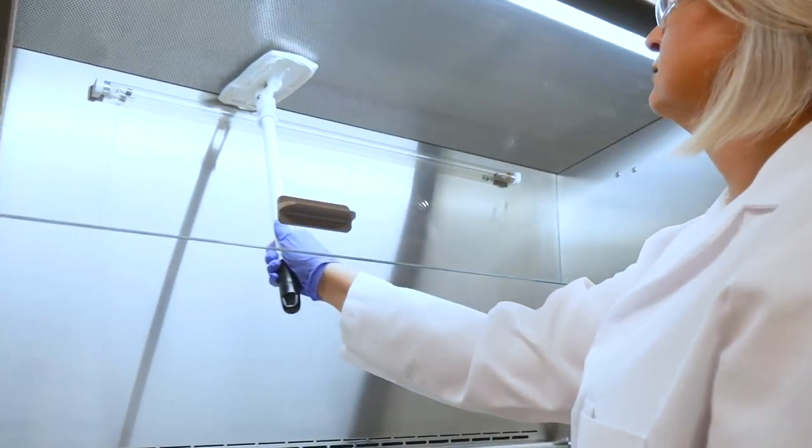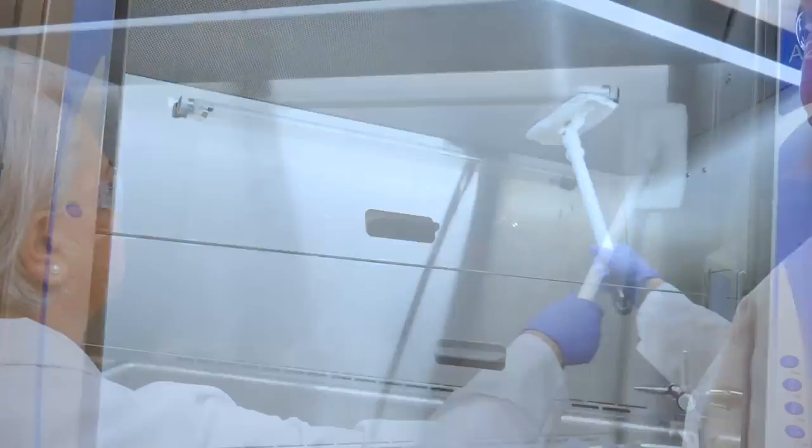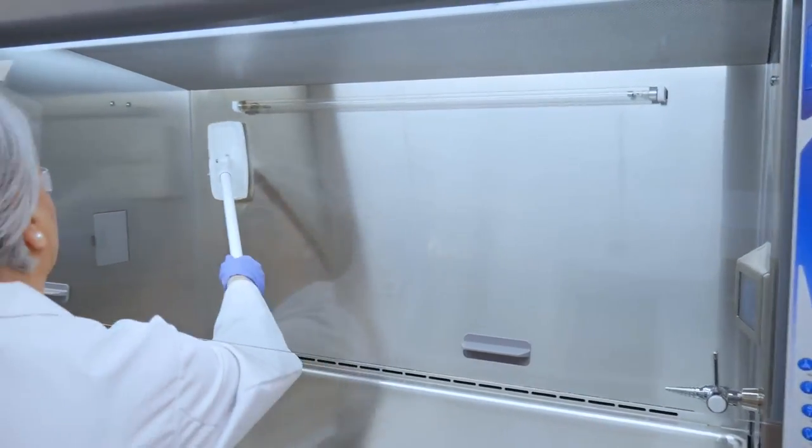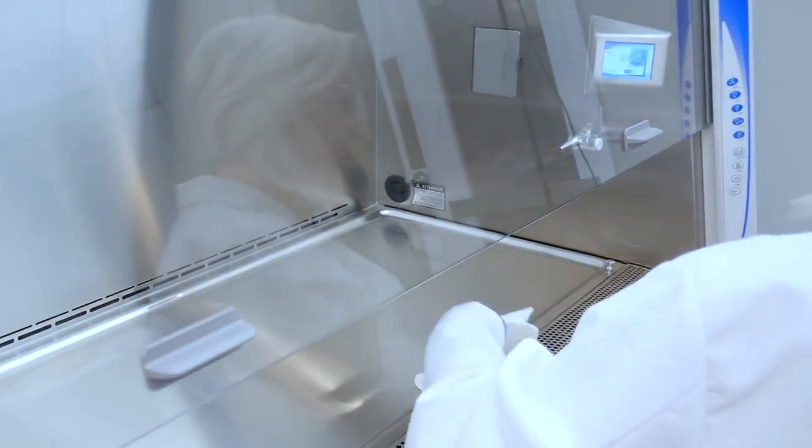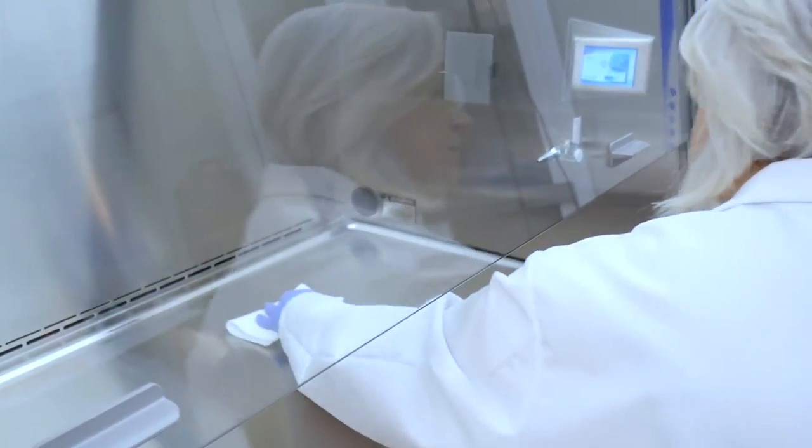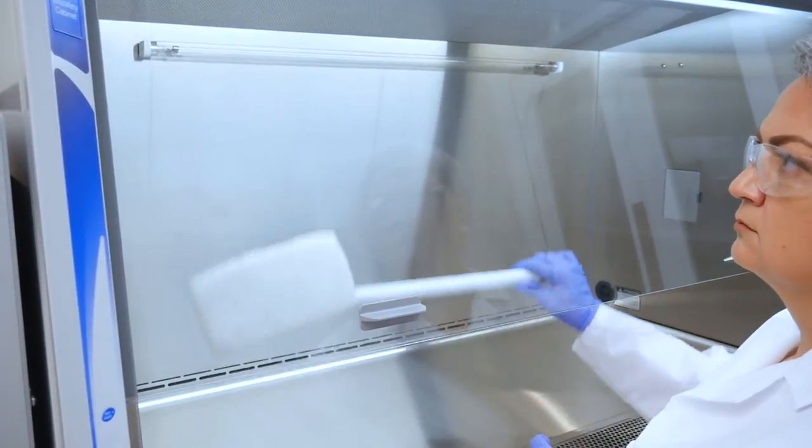Wipe top to bottom and back to front, overlapping with each pass. Use caution when working with disinfectants that contain chlorine, such as bleach. These solutions may corrode the interior of the BSC and when used should be followed by a secondary cleaning with 70% IPA.